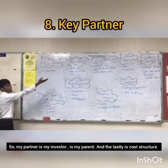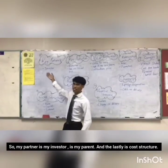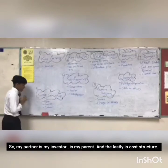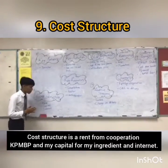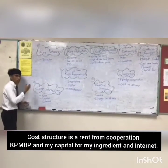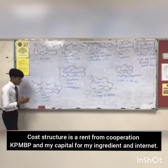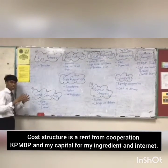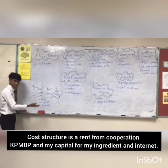The eighth is key partners. My partner and master is my parents. The last is cost structure. My costs include rent for KPMVP Corporation, capital for my investment, ingredients, and internet.